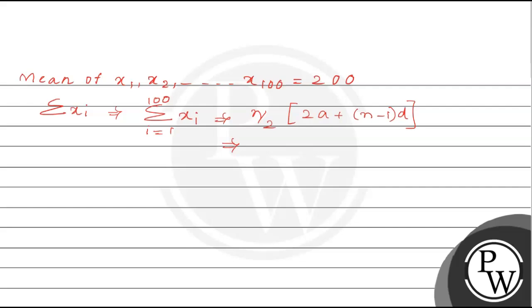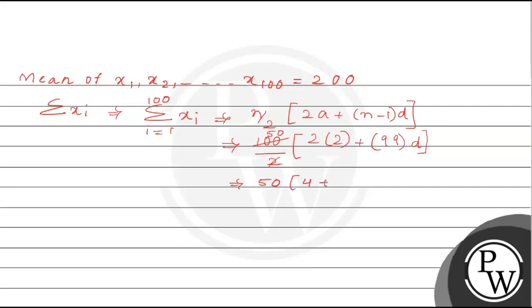Here, n is 100. So the sum is 100/2 times (2 times 2 + (100−1)d). The first term a is given as 2. This simplifies to 50 times (4 + 99d).